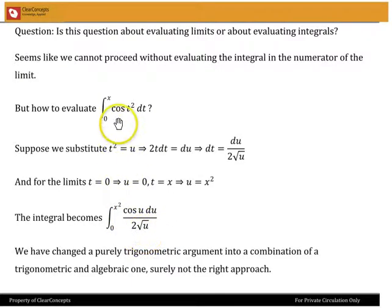Now, initially, we just had a purely trigonometric argument, cos t squared dt. And now we have changed that into a combination of a trigonometric and algebraic one. In other words, we made it more complicated. So this is not the right approach.